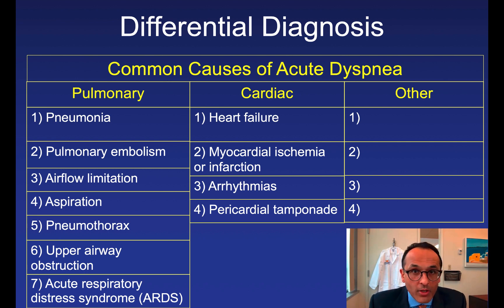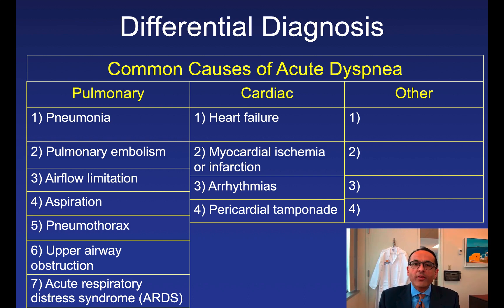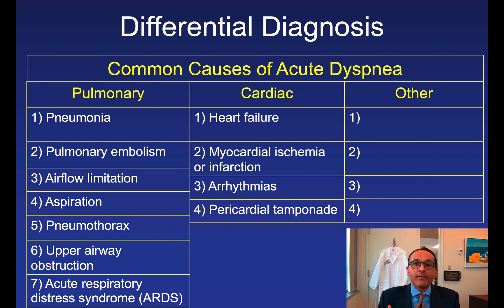Sometimes patients with tamponade have such large amounts of fluid in the pericardial cavity that they won't have chest pain and will present with the triad of despair: elevated neck veins, hypotension, and absence of crackles. There are only a handful of diagnoses that present with this triad. Based on the pathophysiology, the others are right ventricular myocardial infarction, tension pneumothorax, and massive pulmonary embolism due to acute right ventricular failure.